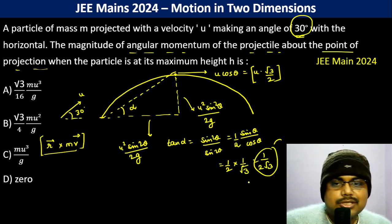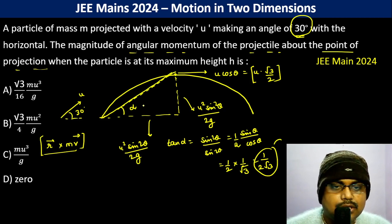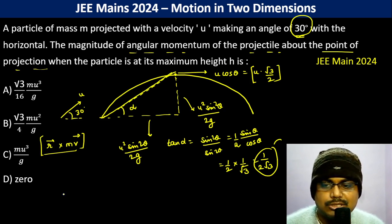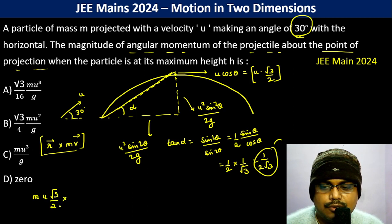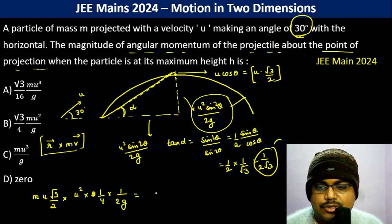Now calculating r cross M v: this is M × u√3/2 × r sin θ. r sin θ is u² sin² θ / (2g), so u² sin² θ which is 1/4 times 1/(2g). This gives mu³√3/(16g), which is the answer.